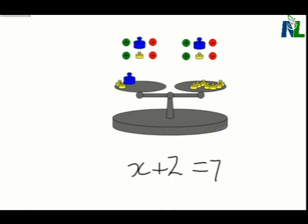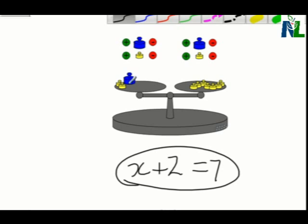So what we're going to do now is we're going to use this pan balance to solve the equation x plus 2 equals 7. And we're going to say that the blue piece is actually the x, and that the little yellow pieces are worth 1 each. And what we have to do is we have to isolate the variables. So we want the x on the left side by itself.